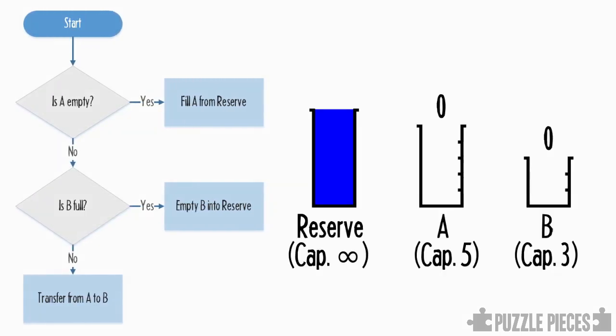So, let's step through those rules and see if we can use them to disarm the bomb in Die Hard. So, on the left, we've got our reserve, which has an infinite capacity from which to refill the other two containers. In the middle, we've got container A with a capacity of 5, and on the right is container B with a capacity of 3.